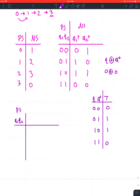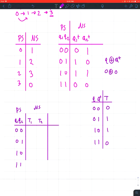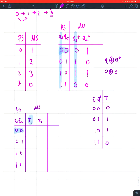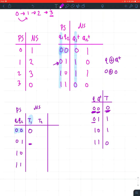Now for the state excitation table with columns Q1, Q2, T1, T2, and the next state. For T1, when Q1=0 and Q2=0, we look at Q1 and Q1-plus: both are zero, so T1=0. When Q1=0 and Q2=1, Q1 is zero and Q1-plus is one — they're changing, so T1=1.